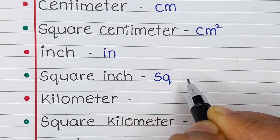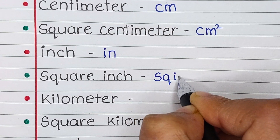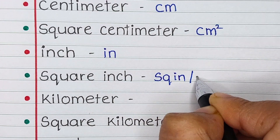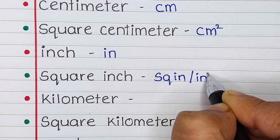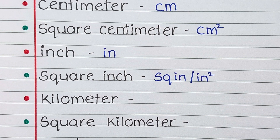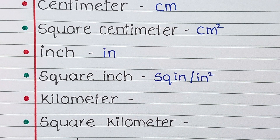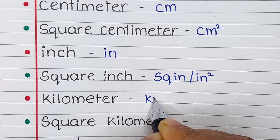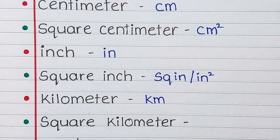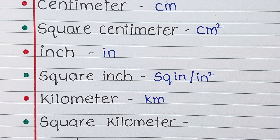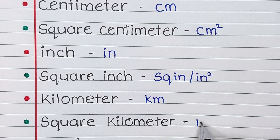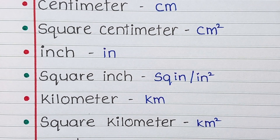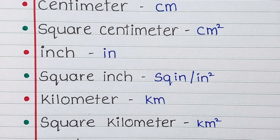Next is square inch. Square inch is written as small s, small q, small i, small n — or small i, small n to the power 2. Next is kilometer. Kilometer is written as km. Next is square kilometer. It is written as km to the power 2.